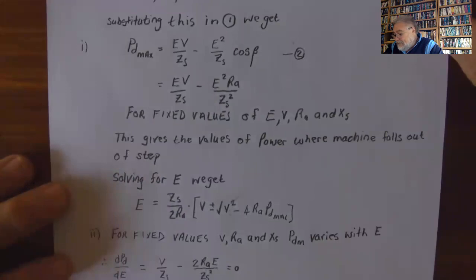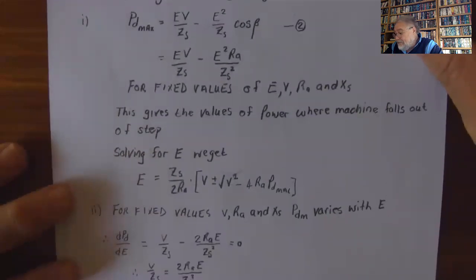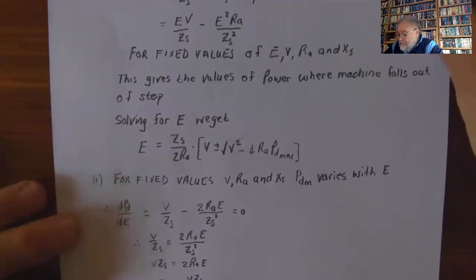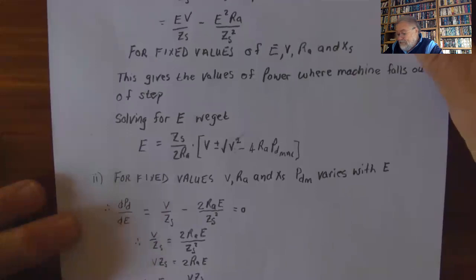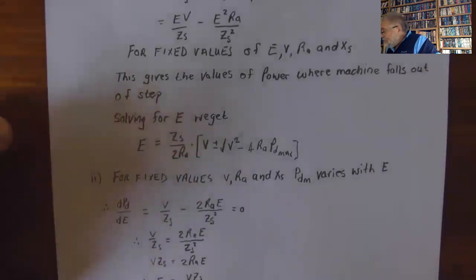This is for fixed values of E, V, R_A, and X_s, and gives the values of power where the machine falls out of step. Solving for E: E equals Z_s over 2R_A times V plus or minus the square root of V squared minus 4R_A times P_D_max. For fixed values of V, R, and X_s, P_DM varies with E. So dP/dE equals V over Z_s minus 2R_A E over Z_s squared equals zero, giving E equals V Z_s over 2R_A. Substituting back yields V squared over 4R_A as the maximum developed power.